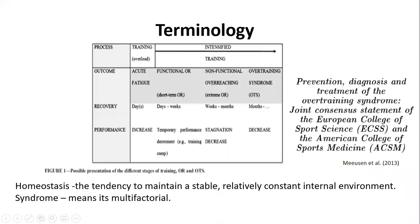Some terminology before we start. Homeostasis is the tendency to maintain a stable, relatively constant internal environment. The whole objective with training is to induce some level of stress to disrupt homeostasis and drive an adaptation. But it's the level of stress we place on athletes that is very important, coupled with recovery times, nutrition, sleep, and other factors.